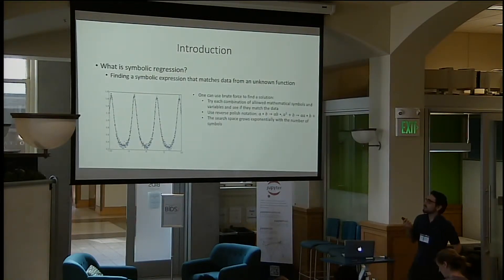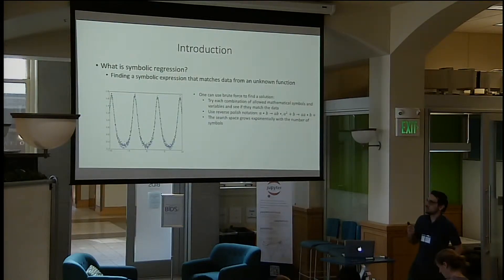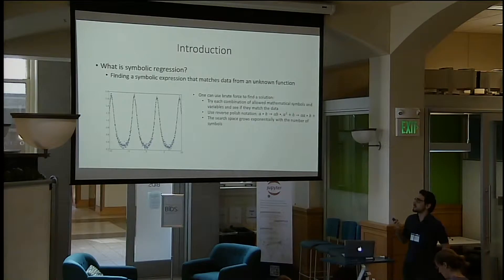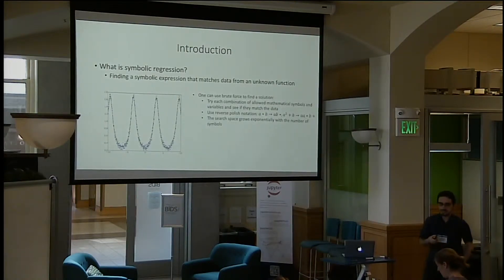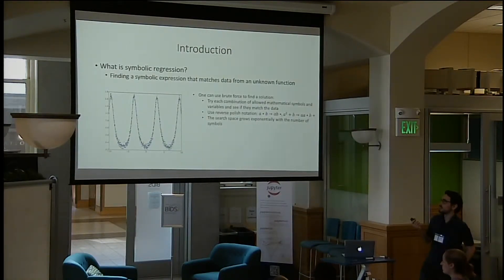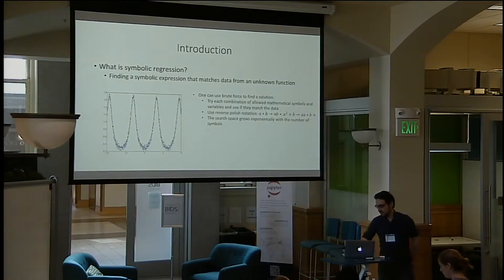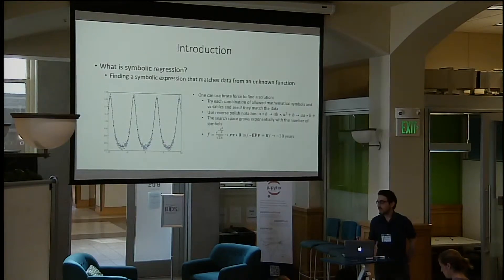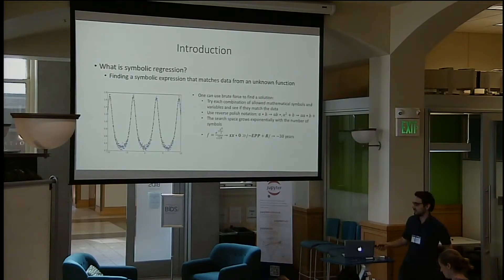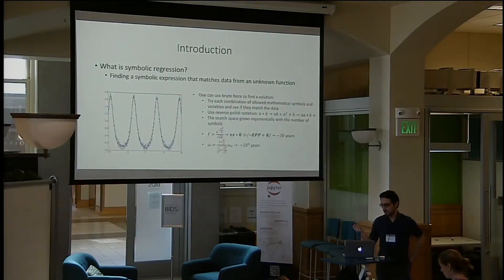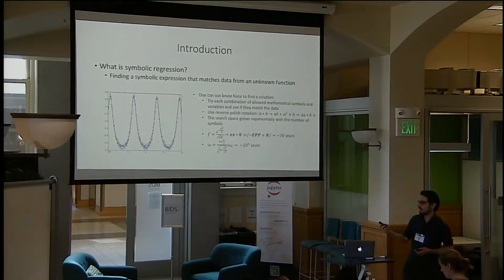One can try to use a brute force method to find a solution, basically trying all the combinations of the allowed mathematical symbols and variables. However, even if you are using an effective notation, such as the reverse Polish notation, the search space grows exponentially with the number of symbols. So even for a one-variable function, the search time can take a few years. For a three-variable function, this can go up to one million years.